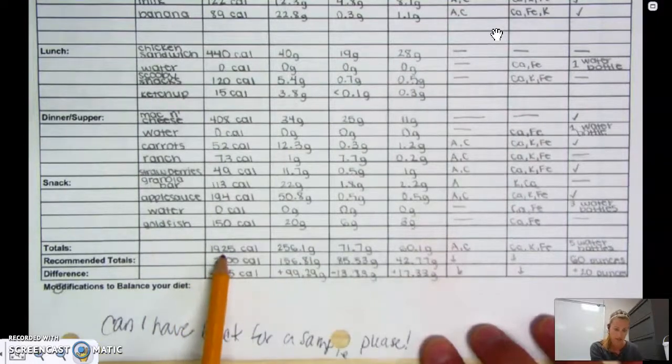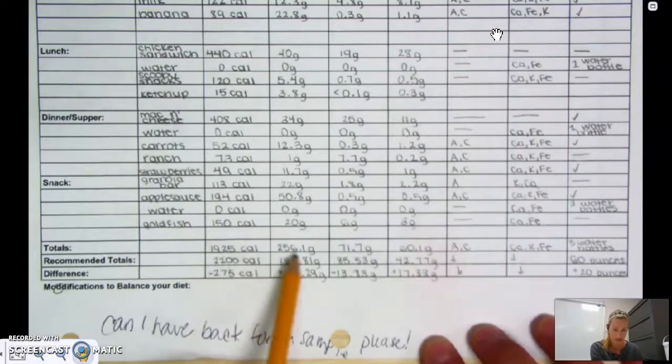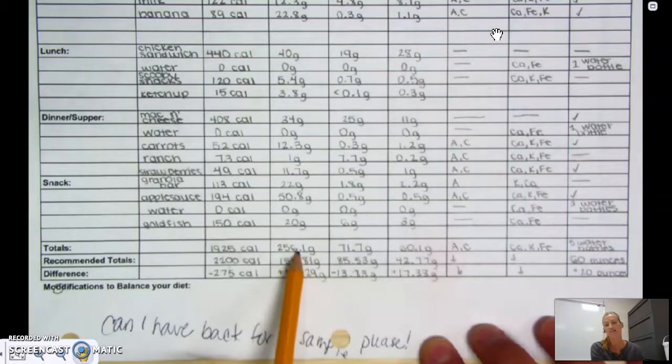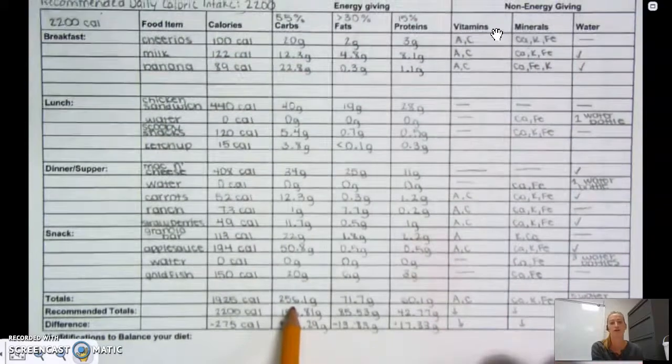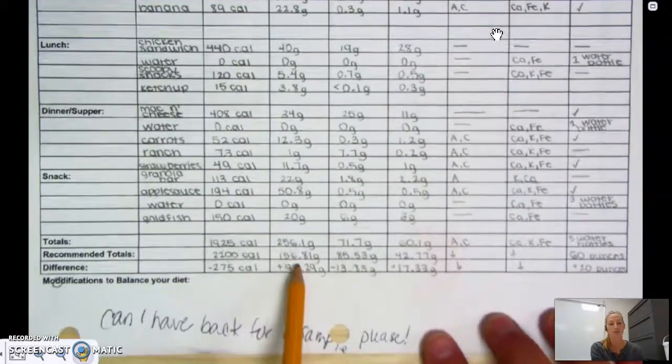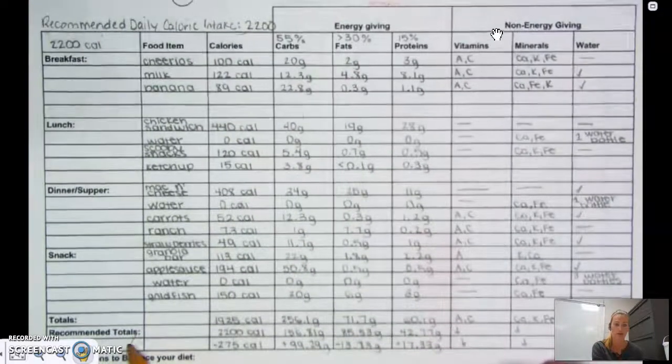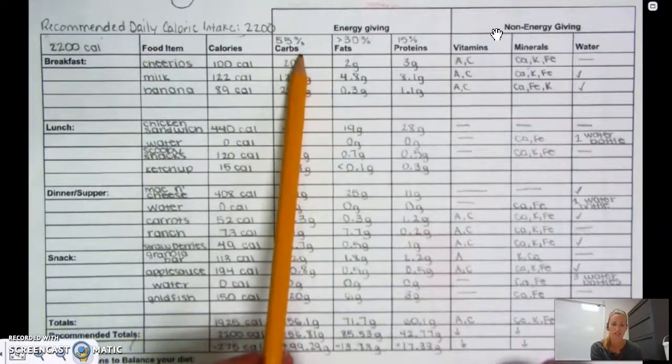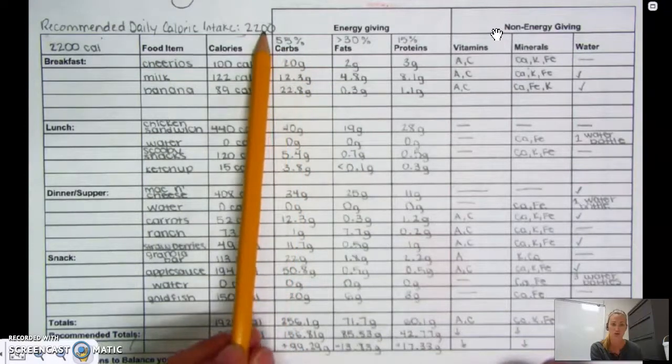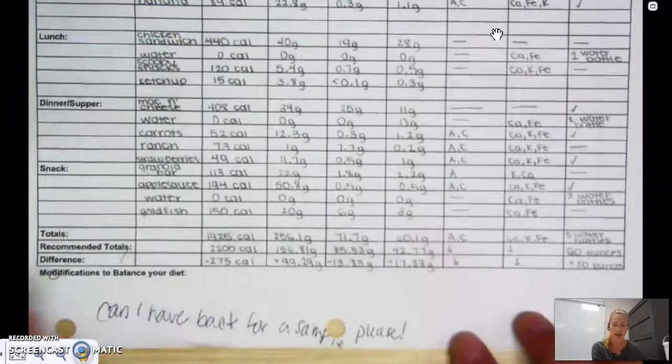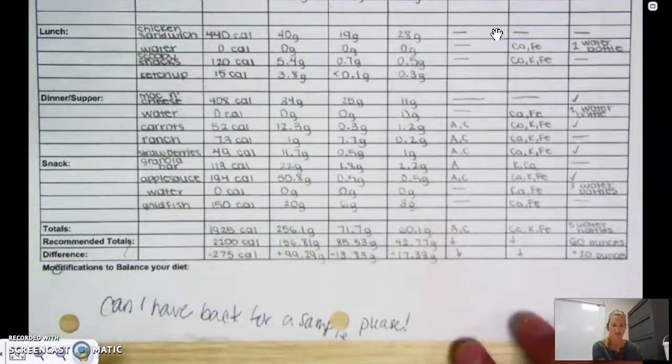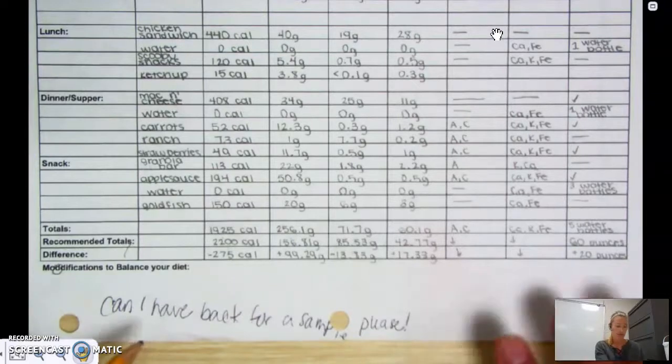She went ahead and totaled up her calories, total calories here, compared them to the recommended daily amounts here, totaled up her grams here, and you might have to do a little figuring off to the side if you have 256 grams of carbs times that by the appropriate number to get calories, and then see if it is the same as the recommended totals. How do you know your recommended total number of carbs that you need? Well, you know the percentage, and you know your total daily caloric intake, so you have to figure that out on your own, okay? With all the practice that we've done up until now, you should be able to do that.